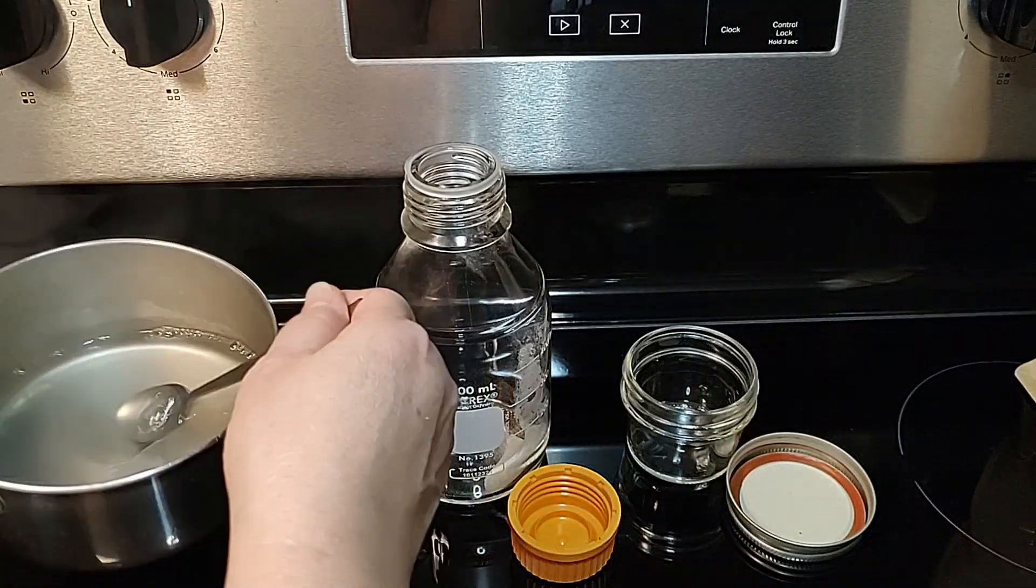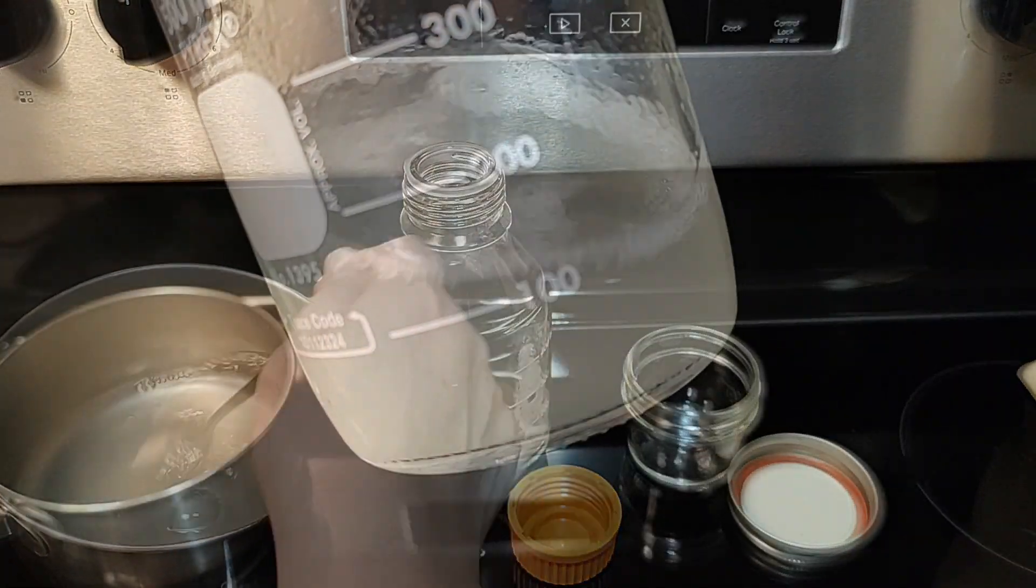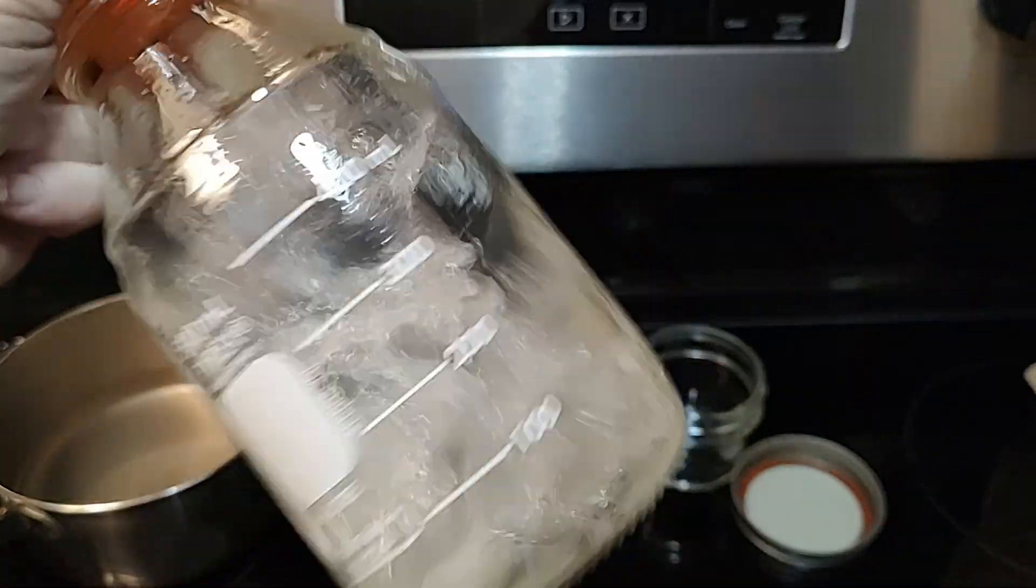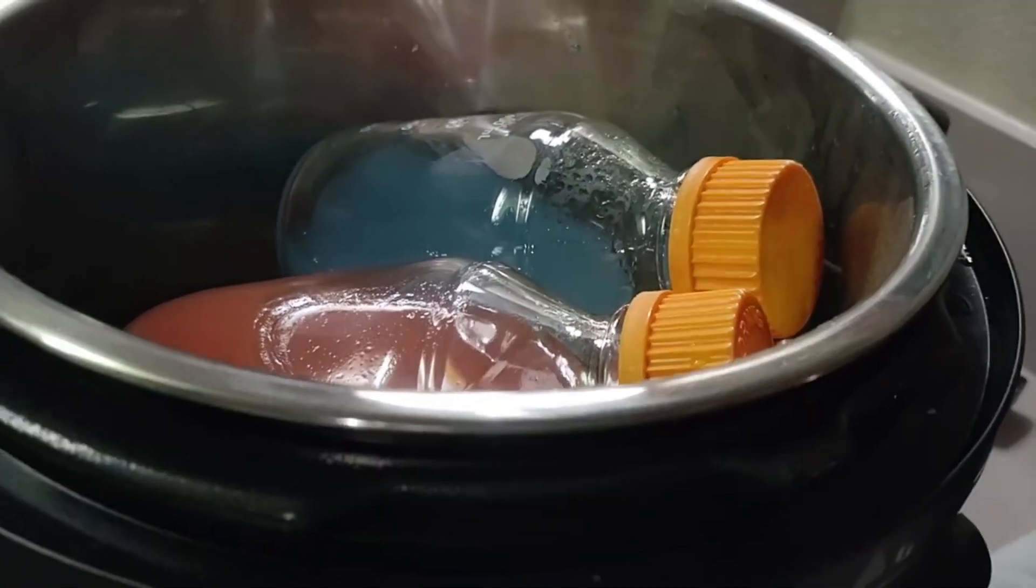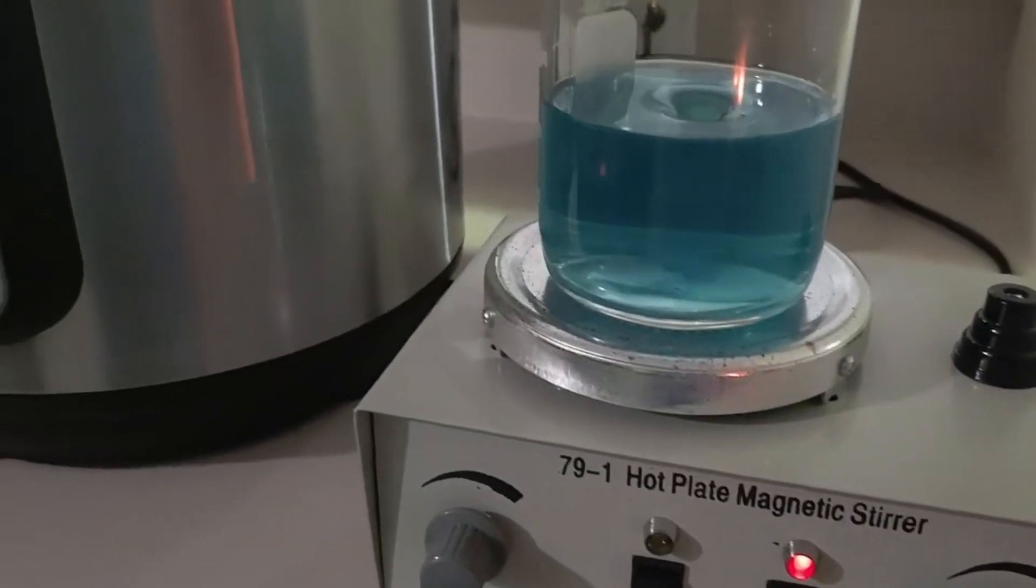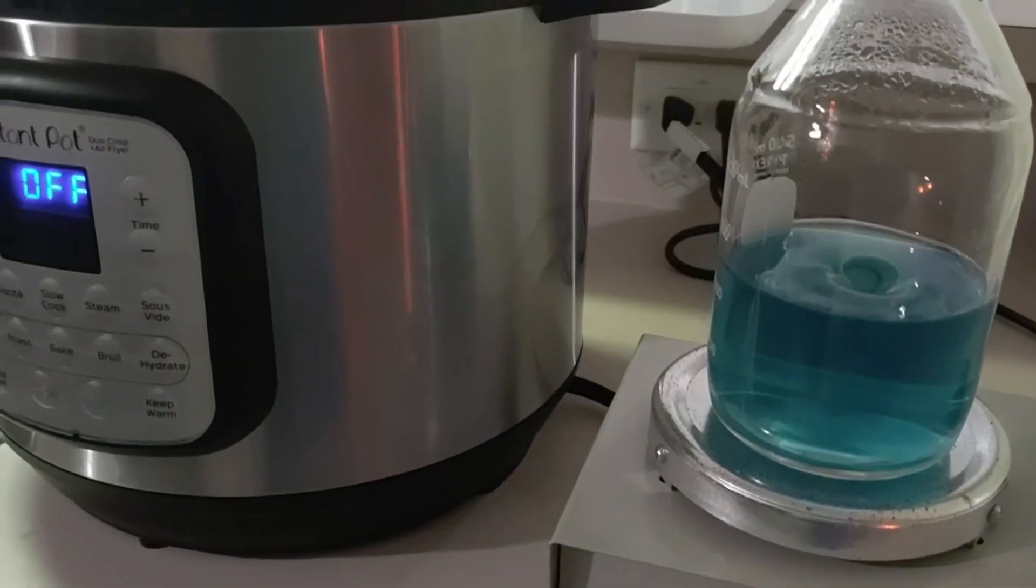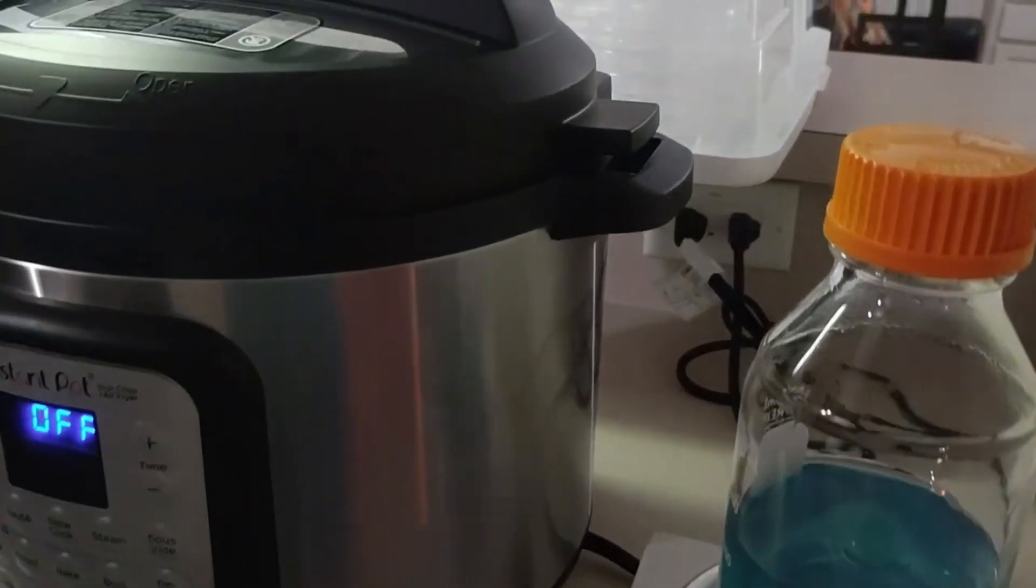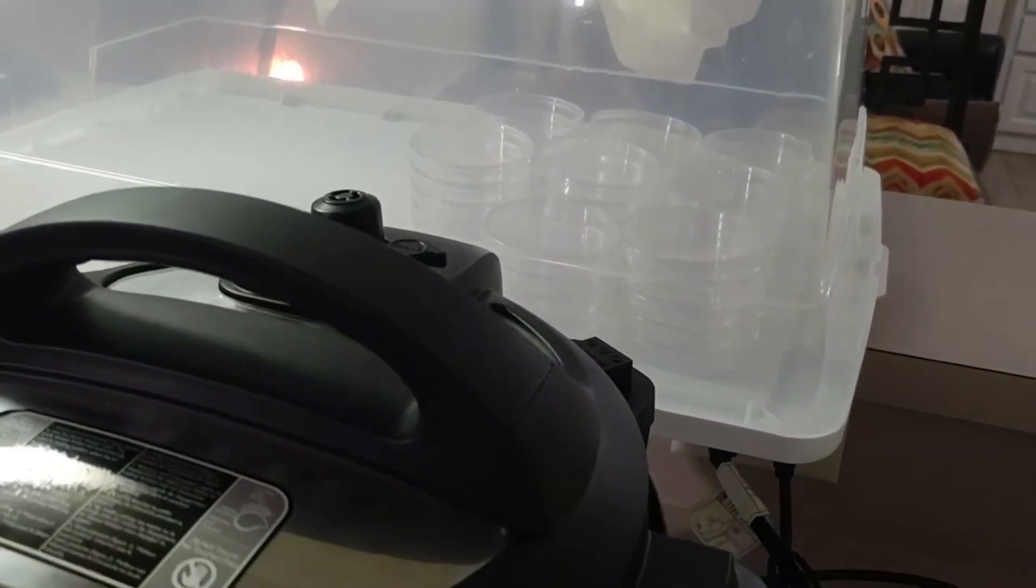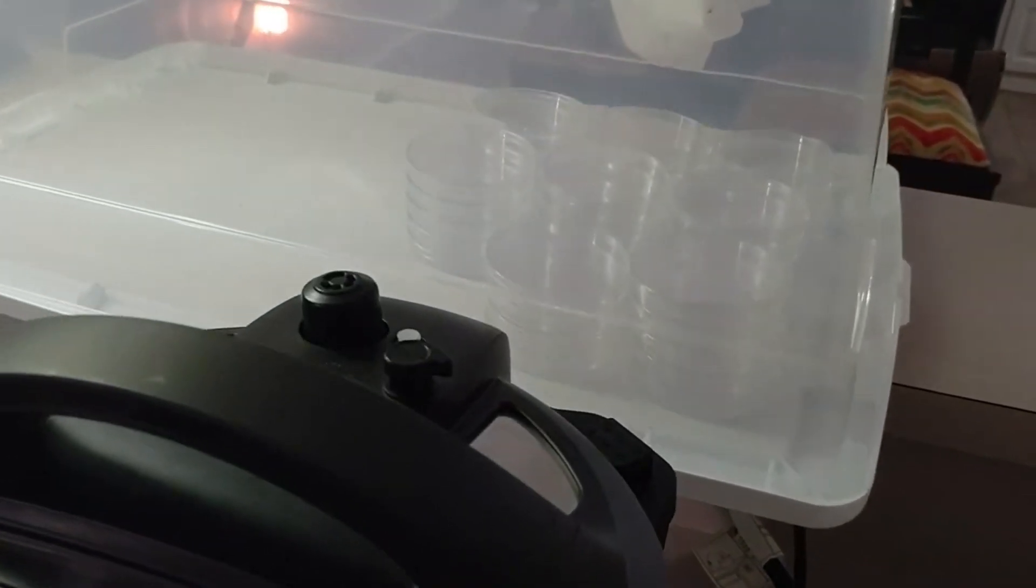Once you have allowed the agar to completely dissolve without clumping, then you're ready to sterilize in the pressure cooker. You will want to pressure cook for 20 minutes at 15 psi, then allow the bottles to cool between 140 and 120 degrees before pouring your dishes. We allow our bottles to cool while stirring on the magnetic plate with the heat off and monitor it with the temperature gun.